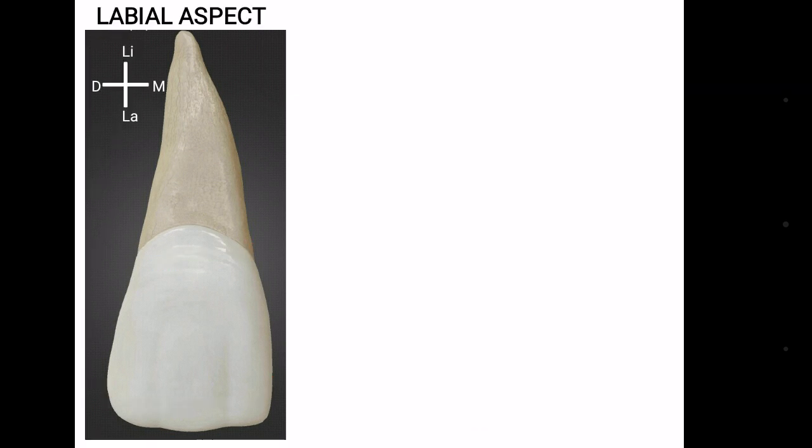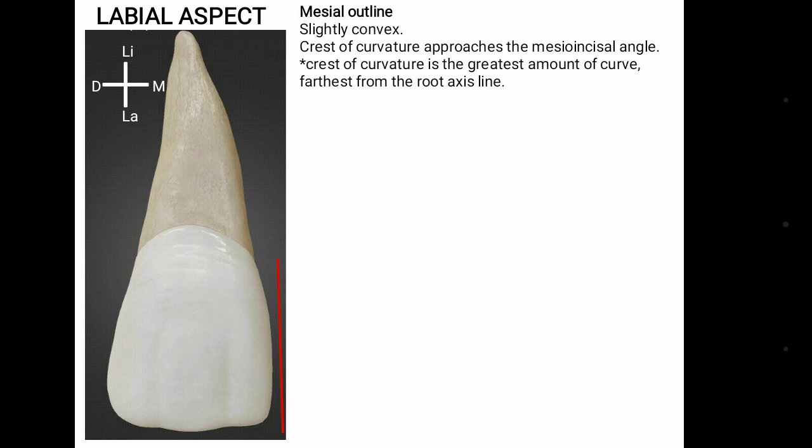Labial aspect is the surface of the tooth which is towards the lip. The mesial outline, which is the surface towards the midline, is slightly convex. Crest of curvature approaches the mesioincisal angle. Mesioincisal angle is the angle between the mesial and incisal surface. Crest of curvature is the highest point on the tooth and this curvature is more well appreciated from the proximal aspect.